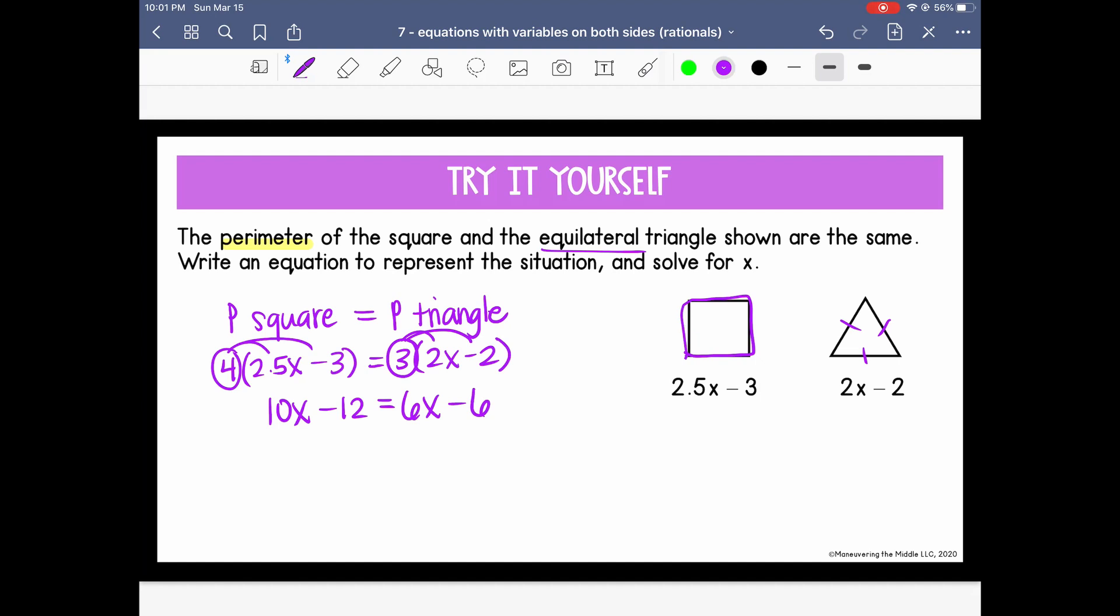So now we can collect our variables on the same side. I'm going to choose to collect them on the left. So I want to subtract 6X. Here, that leaves me with 4X minus 12 equals -6. Let's get rid of this minus 12, undo it by adding 12. So 4X equals positive 6. And the last step is to divide by 4. Okay, so we have X equals 6/4, which we can reduce or simplify that fraction to 3/2. Or we could write it as a decimal and say 1.5.